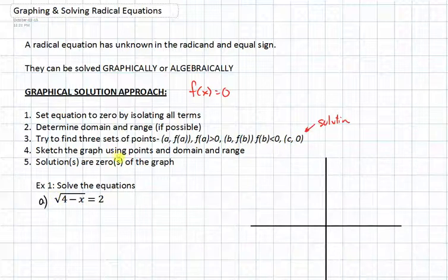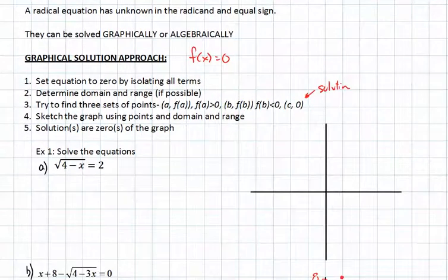Next, you'll sketch the graph using the points, the domain, and range information, and the solutions are the zeros on the graph. A couple of examples. First, this equation.